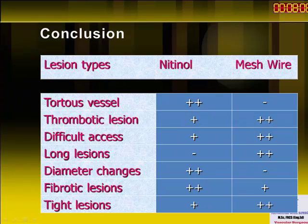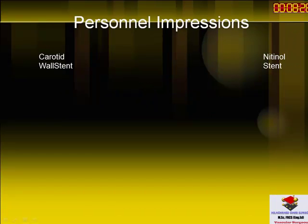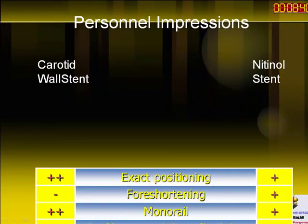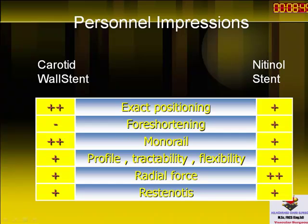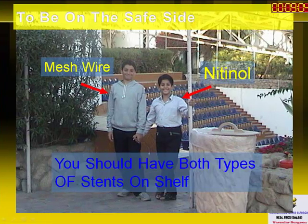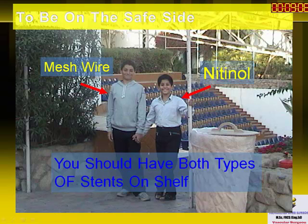If the diameter changes, you are better off with nitinol. My personal feeling is that you get more adaptability with nitinol stents and a smoother angiographic picture with the Carotid Wallstent. You get exact positioning and repositioning with the Carotid Wallstent, and both systems are monorail but it is easier with the Carotid Wallstent. You get higher radial force with nitinol. My conclusion is: when booking a patient for carotid stenting, it is better to have both systems available — mesh wire and nitinol — as this is safer for the patient. Thank you very much.